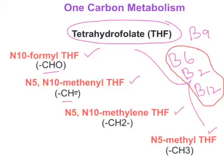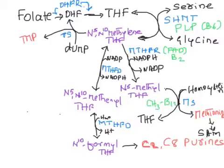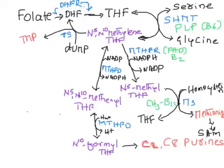Now let's look at the reactions participating in one carbon metabolism in our body. We get folate from green leafy vegetables, usually as polyglutamate form. In the intestine, the glutamates are removed and monoglutamate folate is absorbed. Once in the body, it is converted to dihydrofolate by dihydrofolate reductase, and dihydrofolate is then converted to tetrahydrofolate by the same enzyme. An important applied aspect here is methotrexate, an anti-cancer drug that inhibits dihydrofolate reductase.